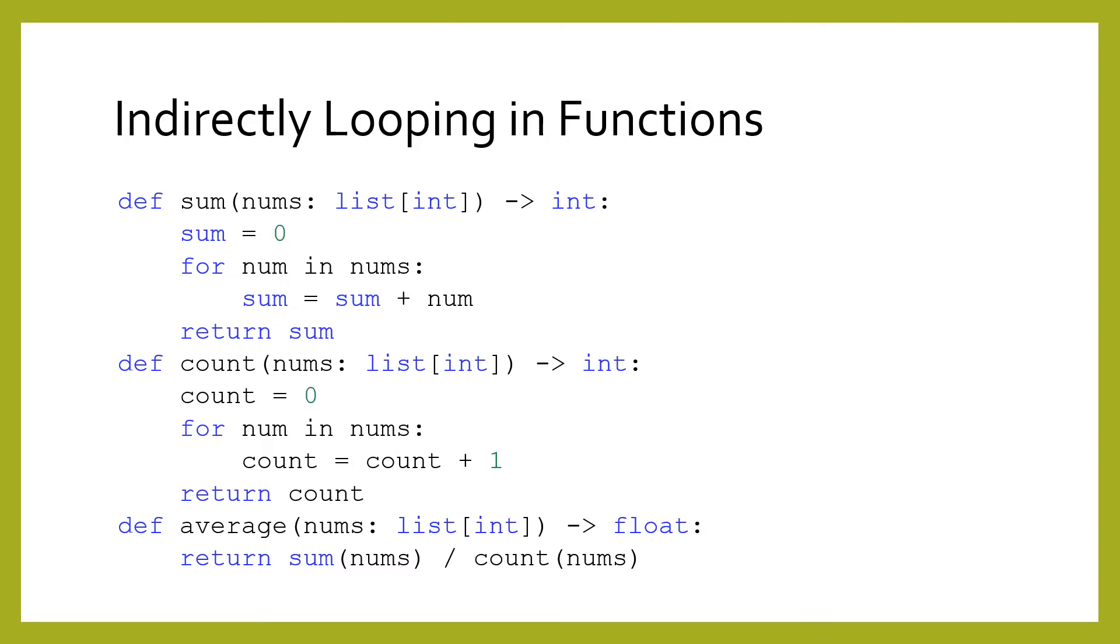Alternatively, you could define functions to sum and count, and then use those functions in your average function. This version does not require a loop directly in the average function, because a loop happens indirectly in a helper function.